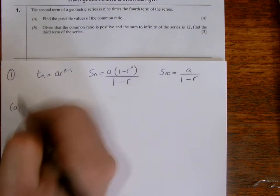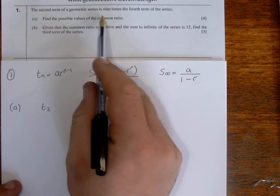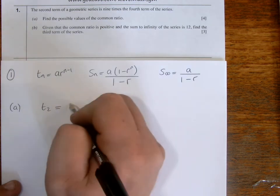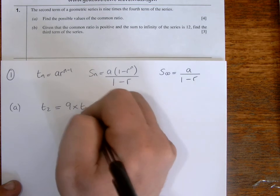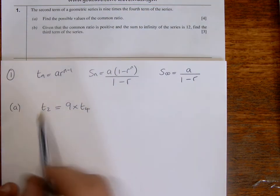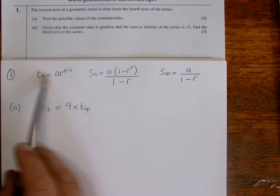So we've got here, second term, so T2 equals nine times the fourth term, T4. So we can use this nth term formula here to establish what our values for the ratio are going to be.